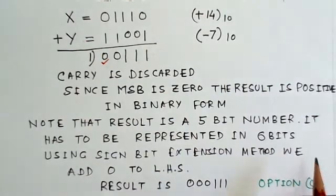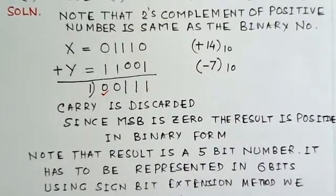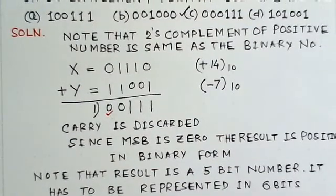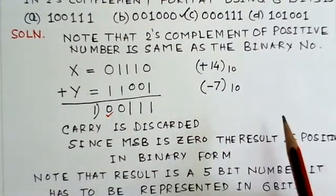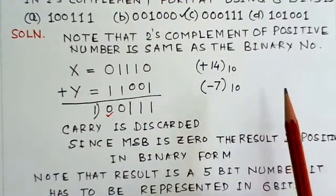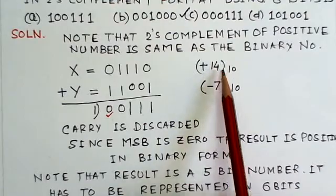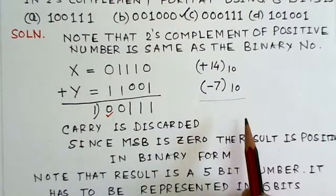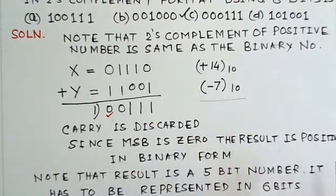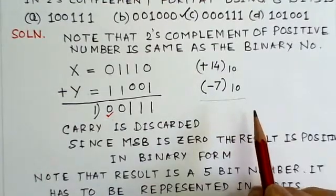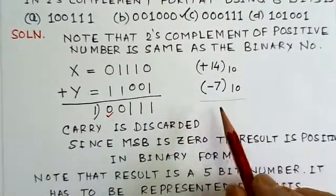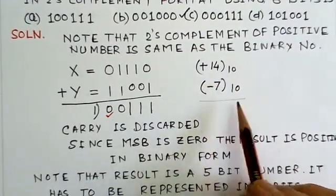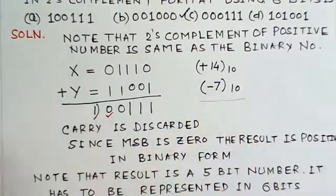For such problems, especially the problems on 2's complement, you should be very particular. Whenever you are doing binary or 2's complement addition or subtraction, you should write the corresponding decimal number also and try to get the result as per the decimal number. And you can verify the result whatever you are getting. So that is the most convenient way to solve problems on 2's complement. Always have a corresponding decimal number along with it, and you can see the result and you can easily verify the result. Thank you.